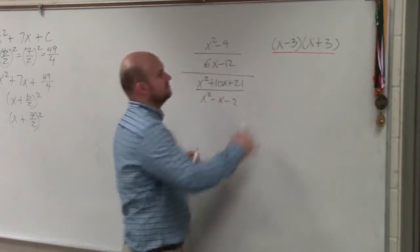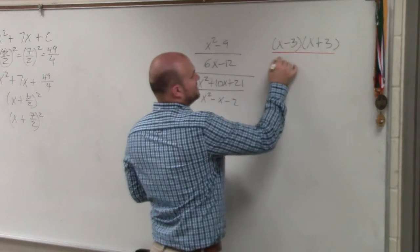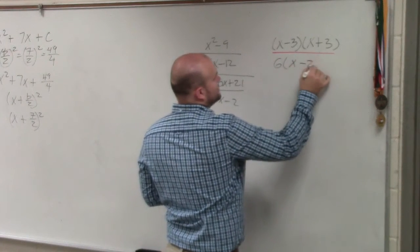Over here, I can factor out a 6. So when I factor out a 6, I'm left with x minus 2.